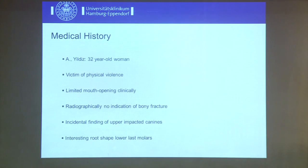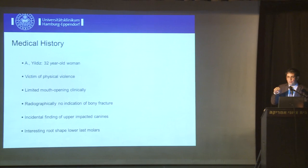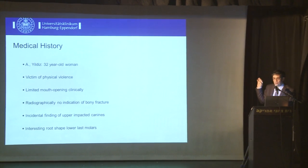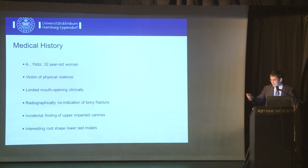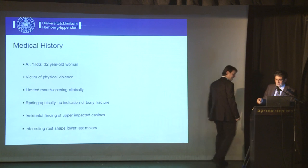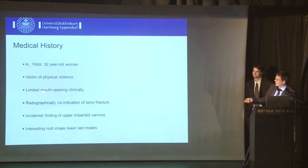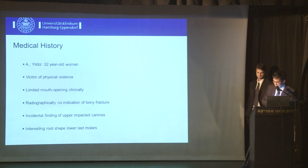This is now the point where we could start with the first dataset. We have a victim of physical violence — a patient from our department — she has limited mouth opening. We will see no fracture, but we will find some incidental findings. This is exactly the point: if you make an image, you have to look at every structure within your volume.